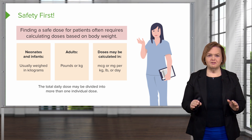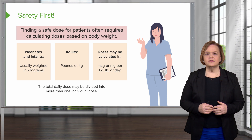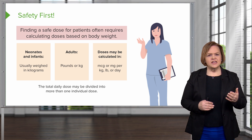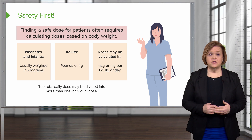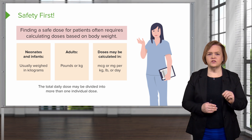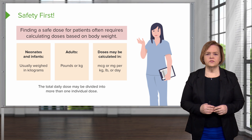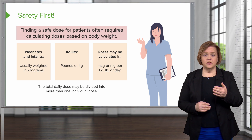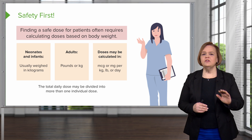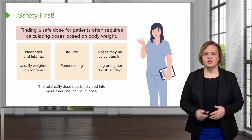Before we move on from here, stay with us. I want you to think through each one of these boxes — are there any notes you need to make to yourself? Under the first box where it says usually weighed in kilogram, write the word kg by that, just so you're clear that's an abbreviation we use. In the second box where we talk about weighing in pounds or kilograms, write the word LB there, even if you already knew that, just to keep things consistent in your notes.